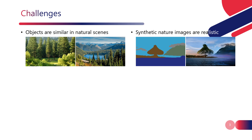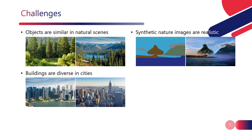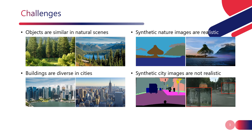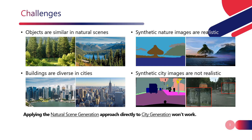Nevertheless, this condition does not hold true for building generation in cities. Buildings within a city exhibit a wide range of diversity. Additionally, employing image translation techniques cannot generate training data free of structural distortions. Therefore, applying the natural scene generation approach directly to city generation won't work.